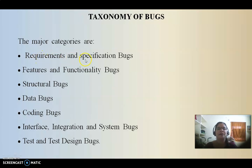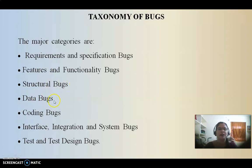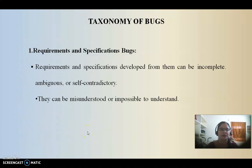These taxonomy of bugs are divided into some set of categories: requirements and specification bugs, features and functionality bugs, structural bugs, data bugs, coding bugs, interface, integration and system bugs, and test and test design bugs.